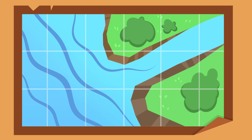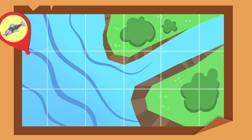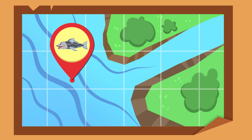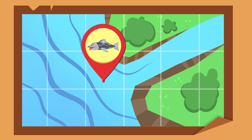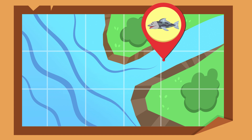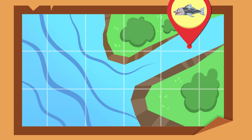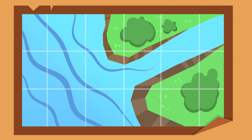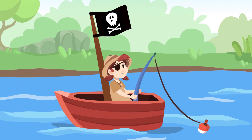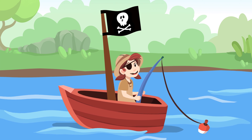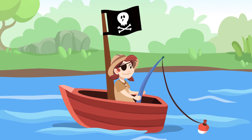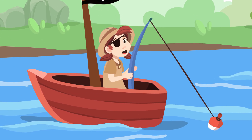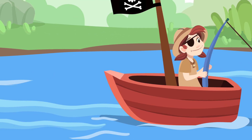Did you know that there are fish like salmon and eel that travel all the way from areas of saltwater to areas of freshwater? What a trip! And that is all about fish — oh, I think I've got something! See you later!